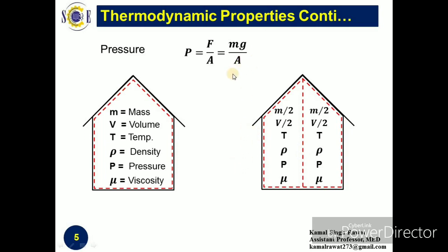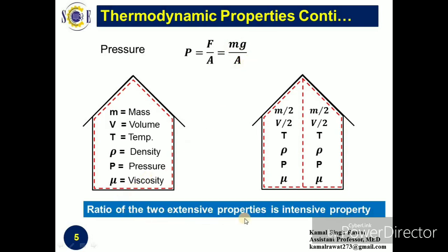With this approach, you can easily find out whether properties are extensive or intensive. If you closely observe the formula for pressure, there is an extensive property in the numerator — mass m — and an extensive property in the denominator — area. The ratio of two extensive properties is an intensive property. That is why pressure is an intensive property.